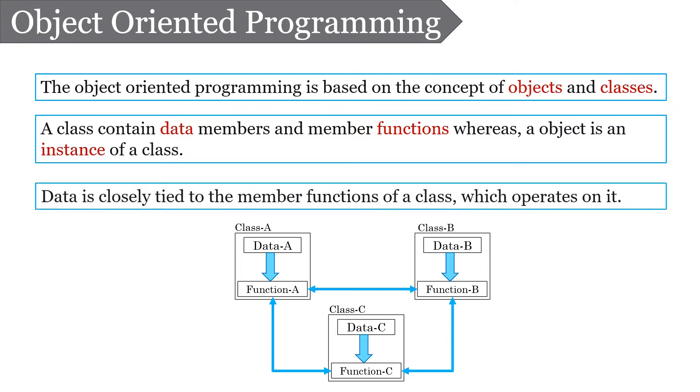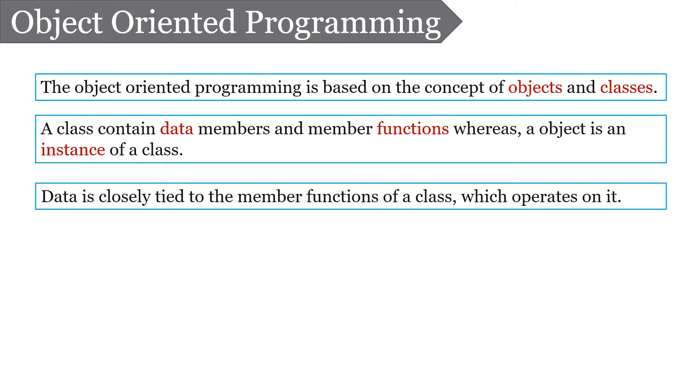In object oriented programming, data is closely tied to the member functions of a class that is going to operate on this data. Thus data is more secure in object oriented programming. The important features of object oriented programming are inheritance, data abstraction, encapsulation, polymorphism, etc.